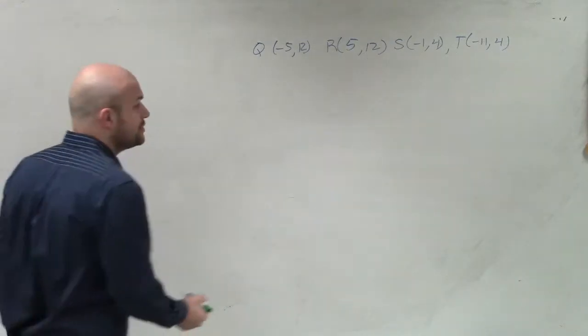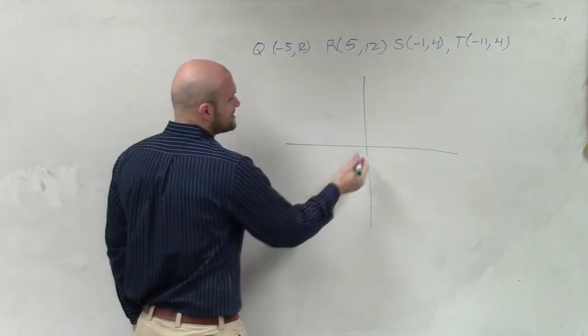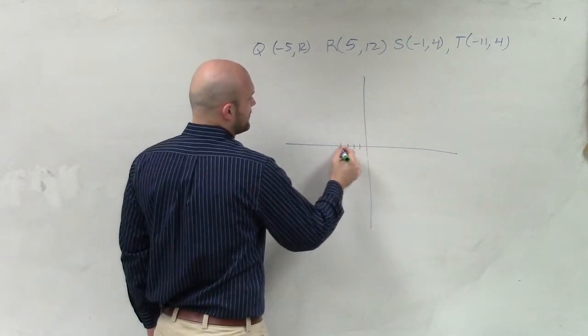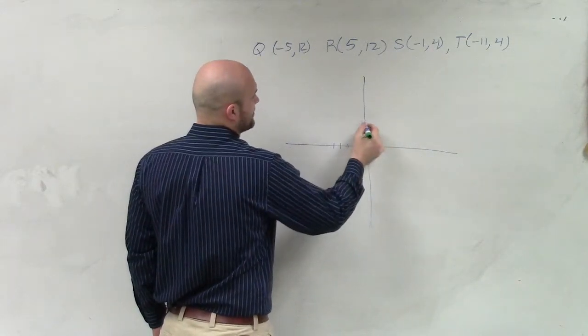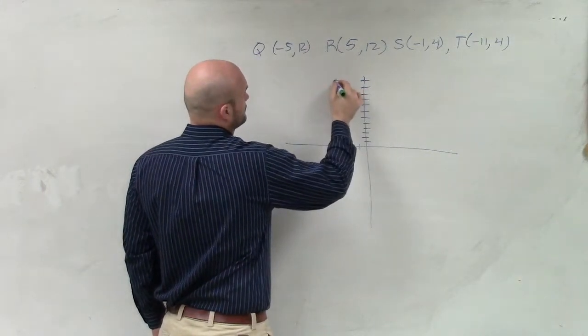So what we need to do first is plot the points. So Q is negative 5, 12. 1, 2, 3, 4, 5. 1, 2, 3, 4, 5, 6, 7, 8, 9, 10, 11, 12. Q.